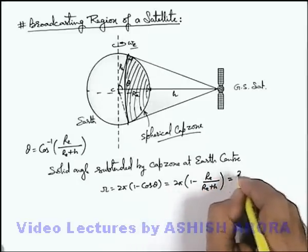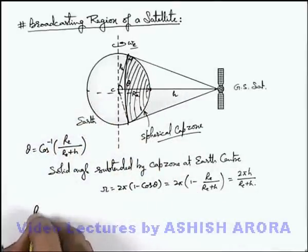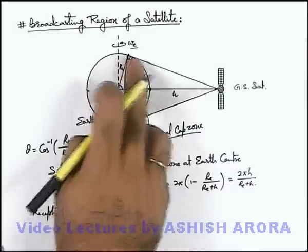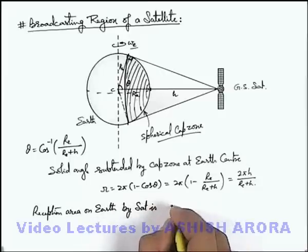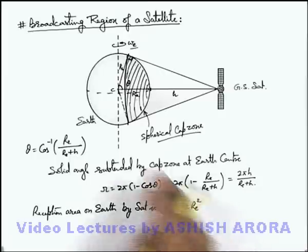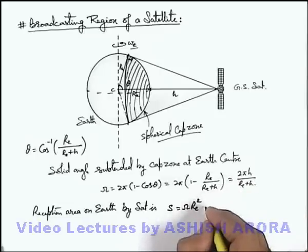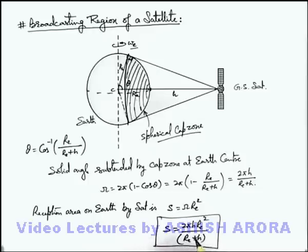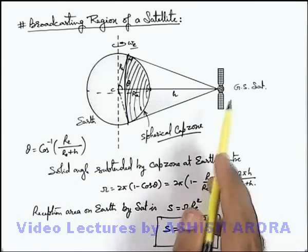On simplifying, we get the solid angle as 2πh / (R_e + h). Having the solid angle, we can directly write the reception area on earth — that is the area of this cap zone. The reception area on earth by satellite is S = Ω·R_e², and substituting the solid angle gives the area as 2πh·R_e² / (R_e + h). This is the relation useful for calculation of the broadcasting region of a satellite on earth's surface — the total area in which the signal sent by the satellite can be received.